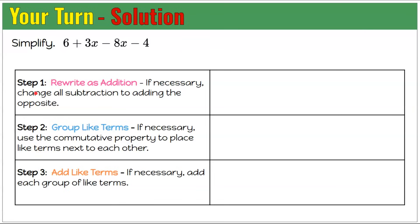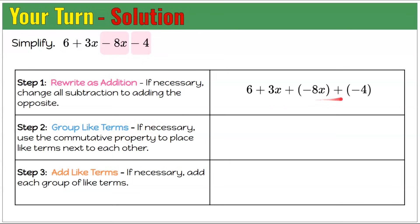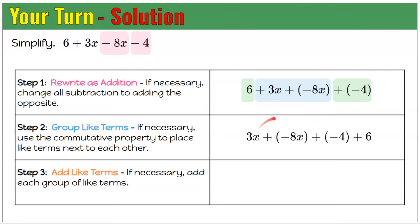Welcome back. Here's our solution. Step 1: rewrite as addition — subtract 8x becomes add negative 8x, and subtract 4 becomes add negative 4. So we have 6 add 3x add negative 8x add negative 4. Step 2: group like terms using the commutative property — 3x and negative 8x together, and 6 and negative 4 together. Rewrite as 3x add negative 8x, and negative 4 add 6.